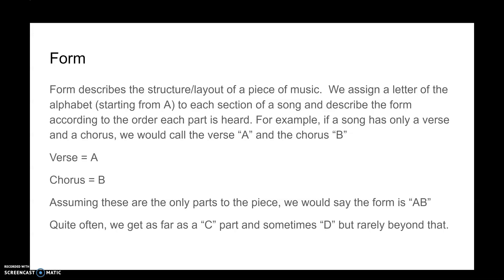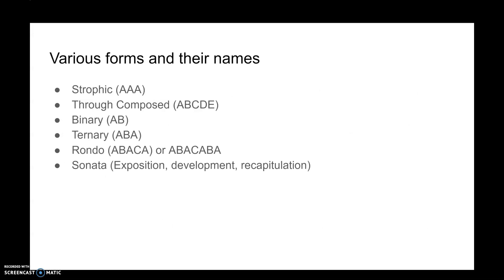If a song had just a verse followed by a chorus and nothing else, we'd say the form is AB — and there is a name for that: binary form. The first type of form is strophic form, indicated as A A A. This is when the same piece of music repeats over and over. It could continue for five, ten repetitions — typically like a pop song with just a verse, never moving to a chorus.